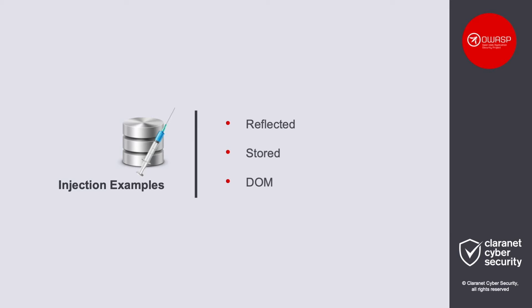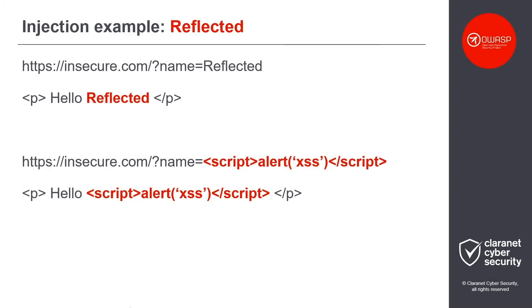Let's take a look at an example of reflected XSS. Here we can see that an insecure web application is taking a search parameter as input from the user, and we can see that the input is then being reflected back in the response. When a malicious user passes executable code as input, the code gets inserted into the web page and executed by the browser. This code could be used to steal the user's session token, allowing the attacker to gain access to the user's account, or to deface the web application's response.